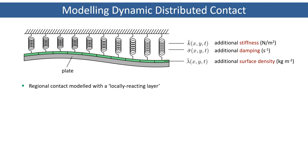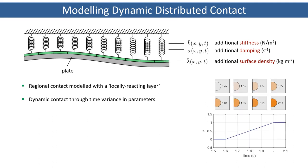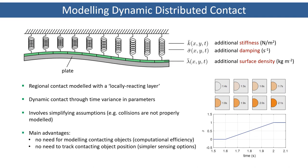So for example, if we want to introduce damping over a certain region, we simply ramp up the value of sigma across that region. Now this approach involves some simplifying assumptions, but it has the advantage that there is no need to model or track the position of contacting objects, thus making this sensor interface problem a lot easier.